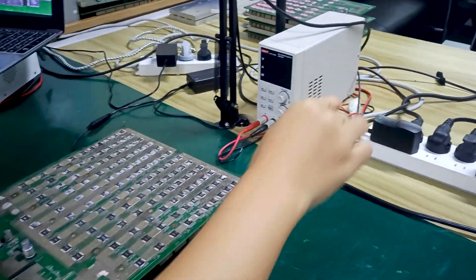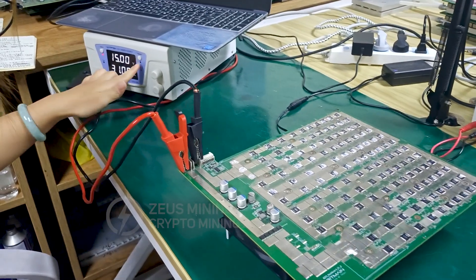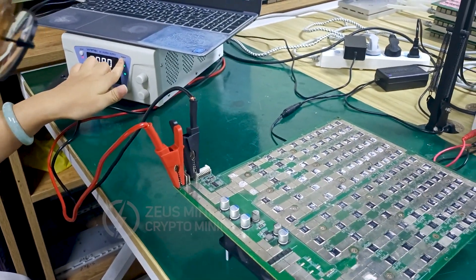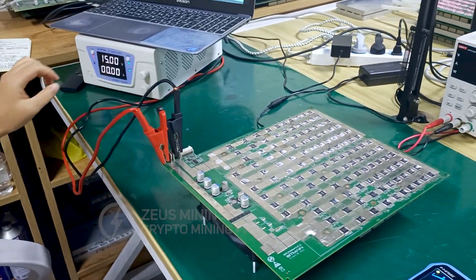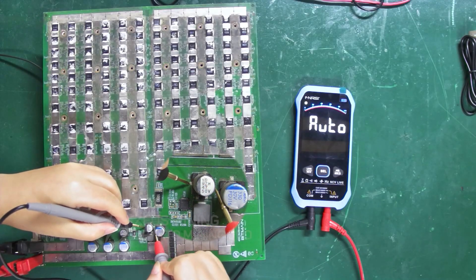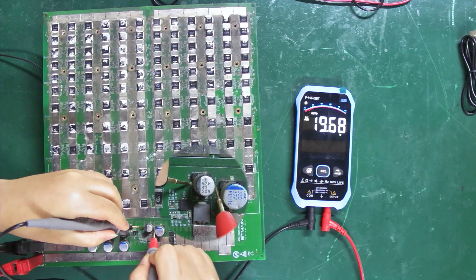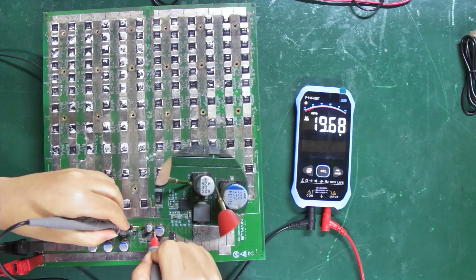How do we use it to measure the DC voltage of the hash board? Place the test leads at both ends of this capacitor. We can see that the output voltage of this boost circuit is around 20 volts.